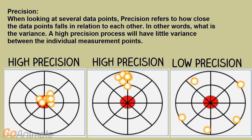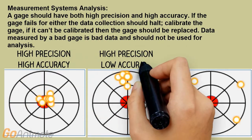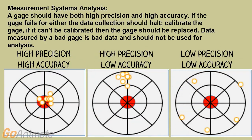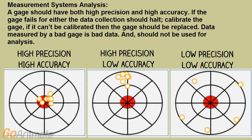The data points will be clustered around each other. A gauge should have both high precision and high accuracy. If the gauge fails for either, the data collection should halt — calibrate the gauge; if it can't be calibrated, then the gauge should be replaced. Data measured by a bad gauge is bad data and should not be used for analysis.